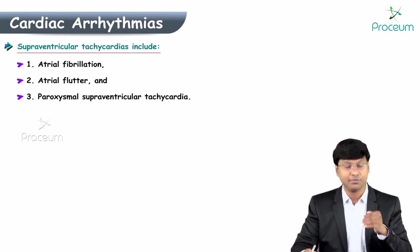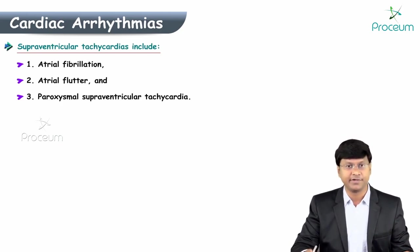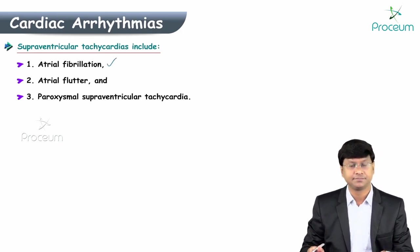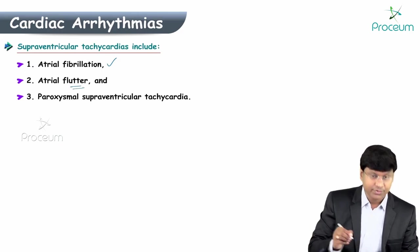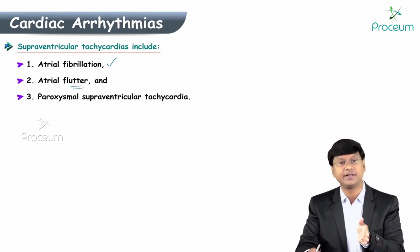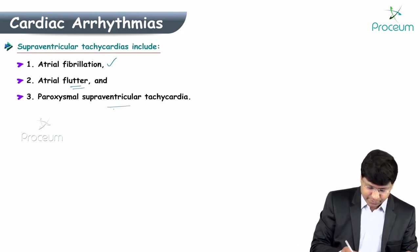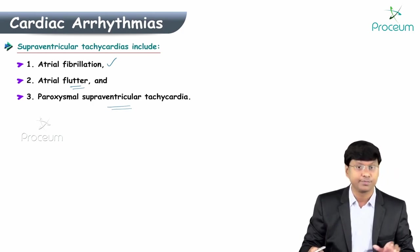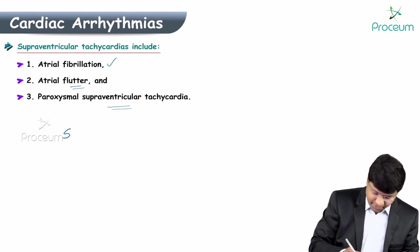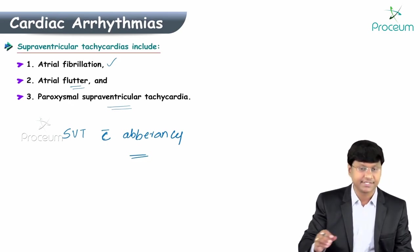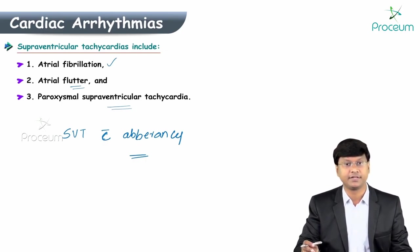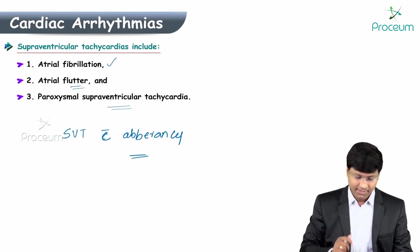Examples of supraventricular arrhythmias include atrial fibrillation, where the atrial rate is nearly 400 to 500 per minute; atrial flutter, where the atrial rate is around 200 to 300 per minute; paroxysmal supraventricular tachycardia; and SVT with aberrancy.